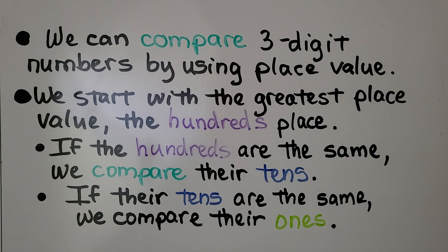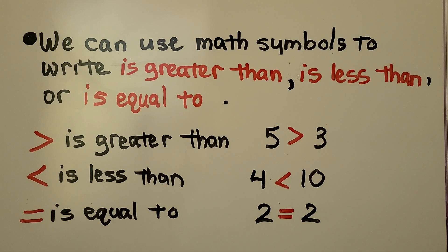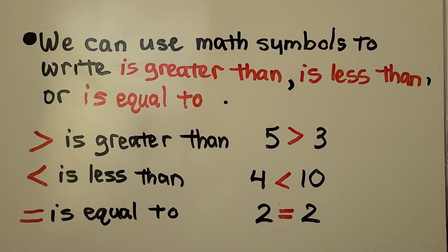If the hundreds are the same, we compare their tens. And if their tens are the same, we compare their ones. We can use math symbols to write is greater than, is less than, or is equal to.